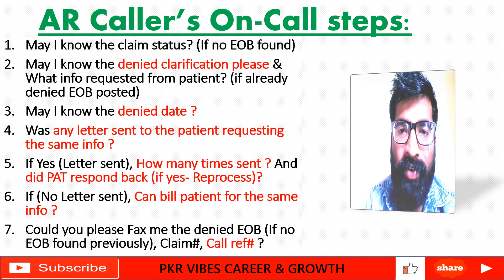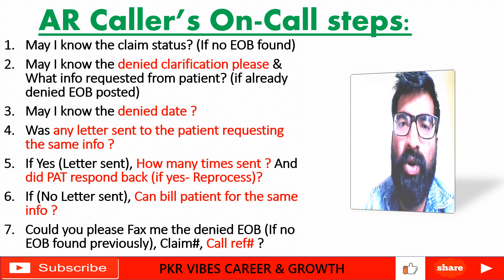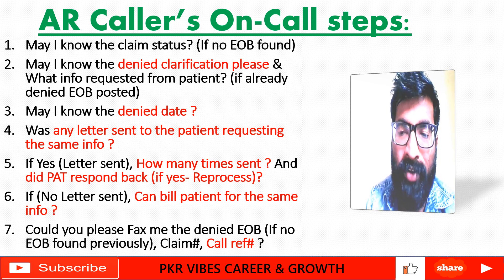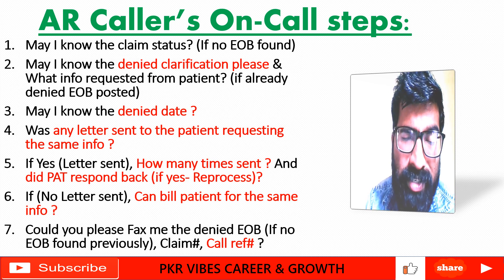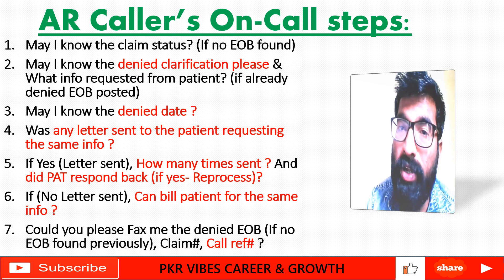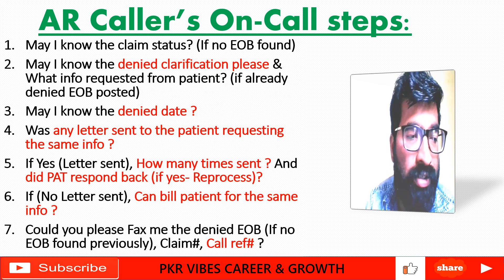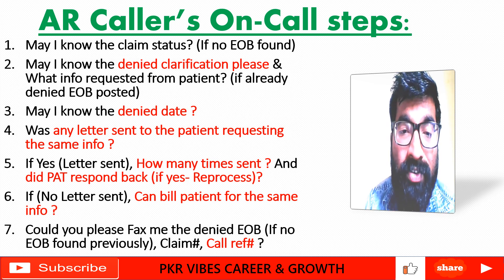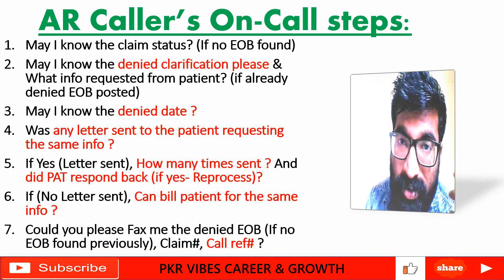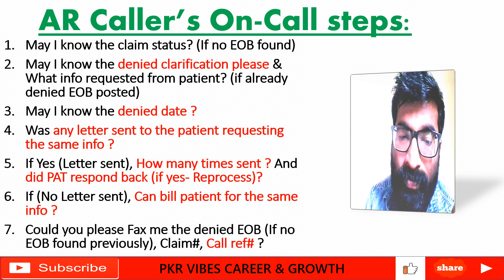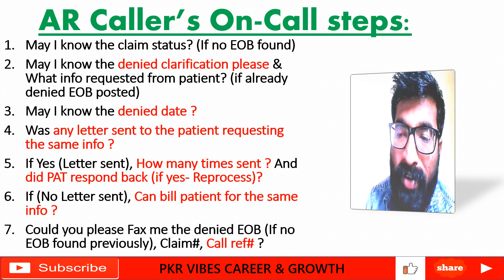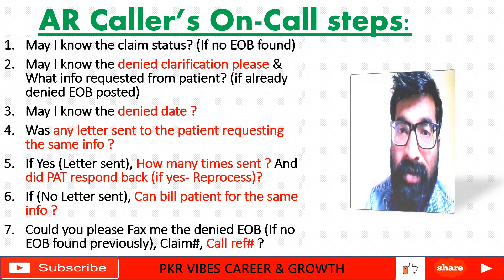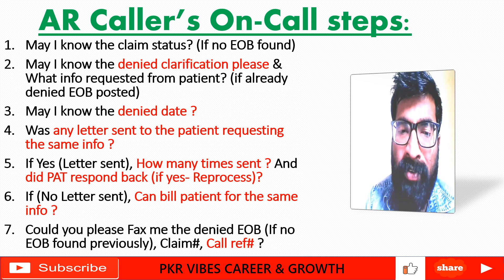Now we are discussing the on-call scenario for information requested from the patient. For example, if on pre-call analysis you found no EOB received, you should call like this: 'Hi, this is Peter, I am calling from the provider's office checking on a claim status.' If a denial is already posted with denial code CO-227, your question would be: 'Hi, this is Peter, I am calling from the provider's office checking on a denied claim.' It is better to provide the claim number so the representative can give the status directly without wasting time.